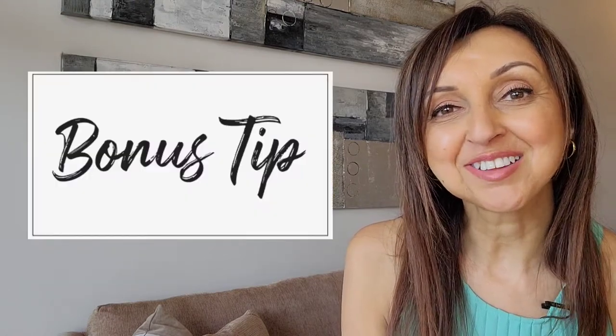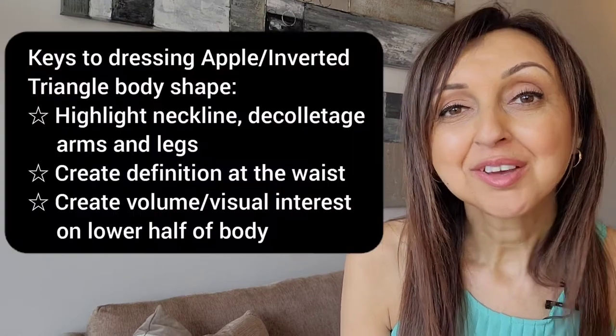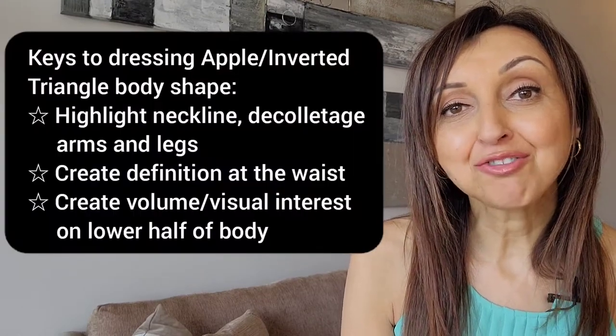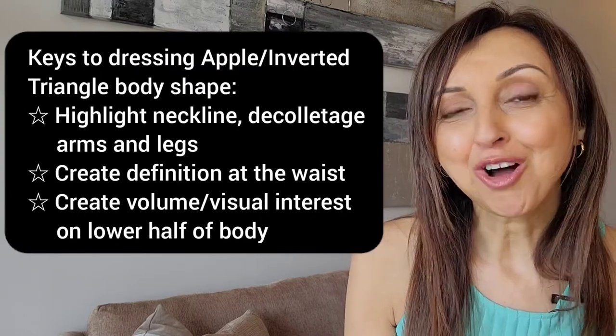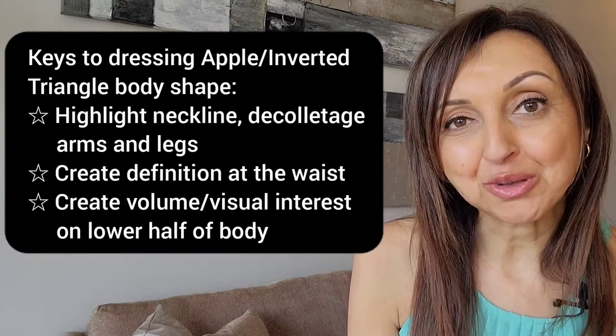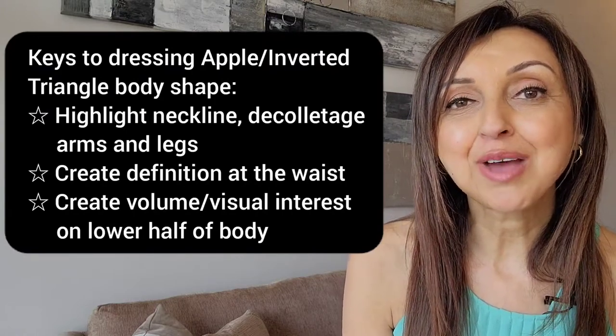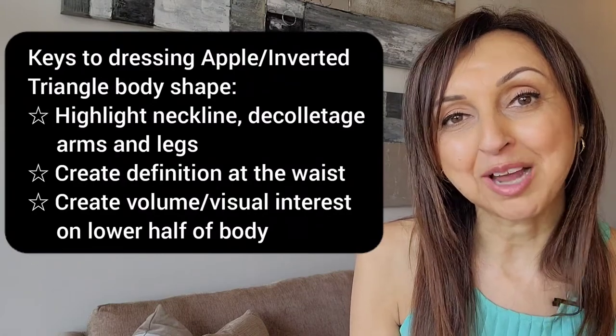Before I go into the actual tips on how to dress the apple or inverted triangle body shape, I want to ask you to stay until the end where I'll share some bonus tips on what to avoid. There are three aspects to focus on: first, this body shape tends to have a fuller bust line and amazing arms and legs, so you may want to highlight these; second, you want to create definition around the waist; and third, add volume to the lower body for a more balanced proportion.